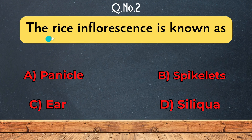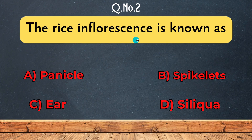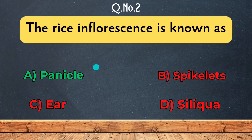Question 2: The inflorescence of rice. Options are Panicle, Spikelets, Ear, and Silica. What does rice's inflorescence mean? The correct answer is Panicle. We have a panicle. The grain is formed in the panicle.